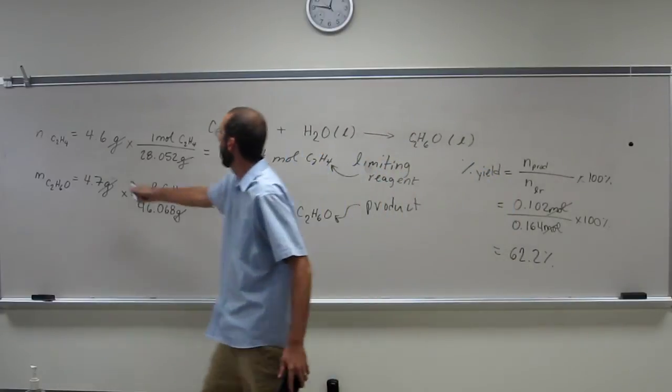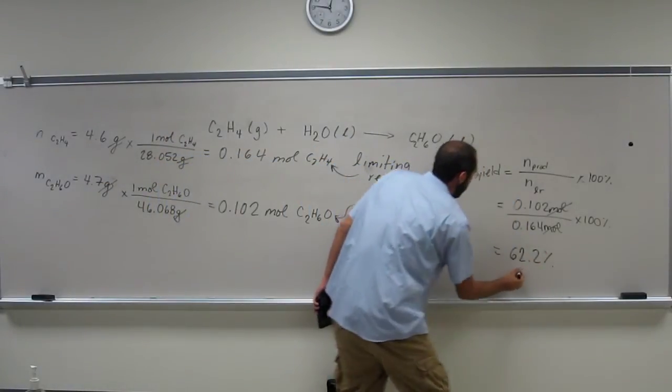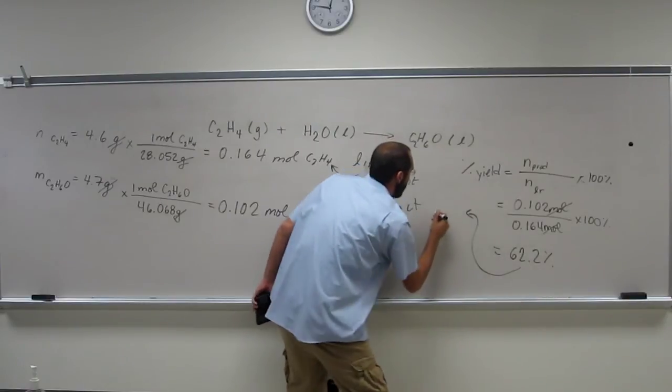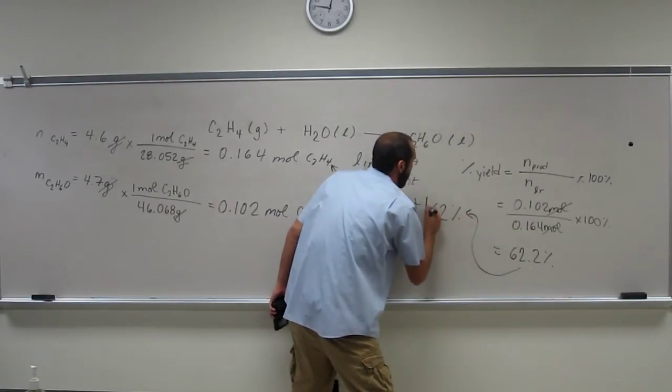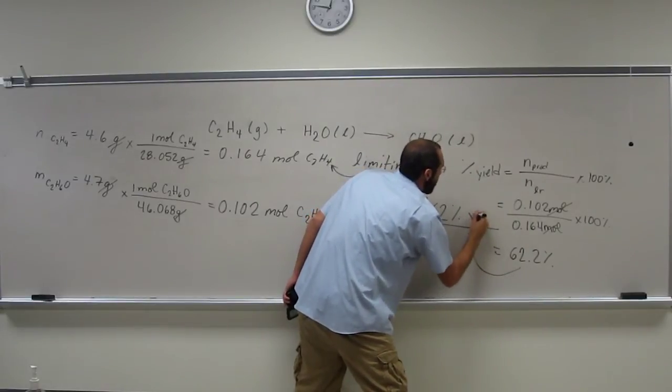But when we come back over here, it's two sig figs. So let's just take it to two sig figs. So it's going to be 62%.